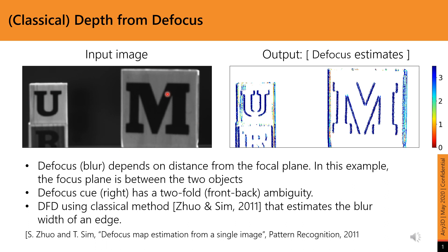On the left, we show our input image. The plane of focus for this scene is between the U and M blocks. We can use Zuo and Sim's method to estimate the defocus blur here. However, under a symmetric aperture, the defocus estimates from a single image have an inherent front-back ambiguity.